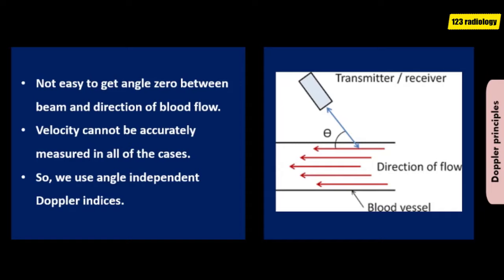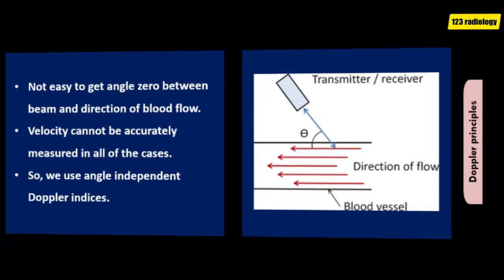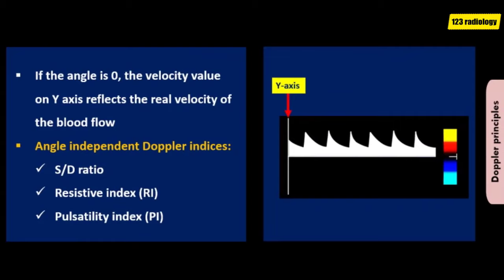It is not always easy to get an angle of zero between the ultrasound beam and the direction of blood flow. Therefore, the velocity cannot be accurately measured in all cases. This is the reason why we often use angle-independent Doppler indices to analyze the waveform. The most useful Doppler indices are SD ratio, resistive index, and pulsatility index.